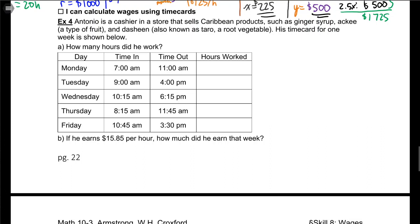Antonio is a cashier in a store that sells Caribbean products such as Ginger Syrup, Ackee, and Dasheen. Those are both delicious and you should try them if you haven't. Anyway, his time card for one week is shown below. How many hours did he work? So Monday, Tuesday, Wednesday, Thursday, Friday, whatever. Let's go through one row at a time.